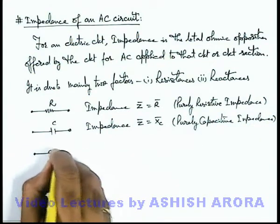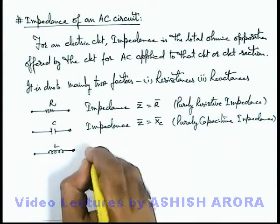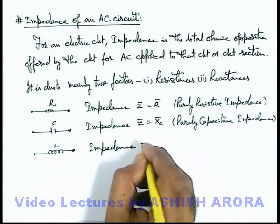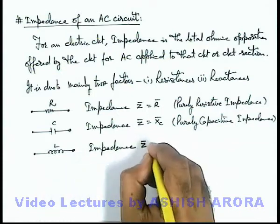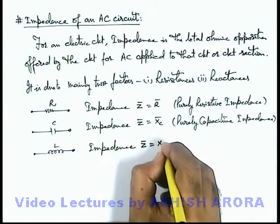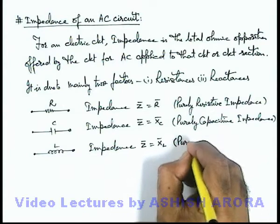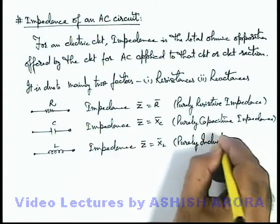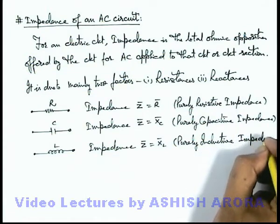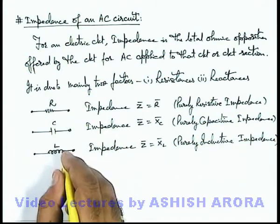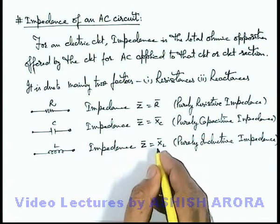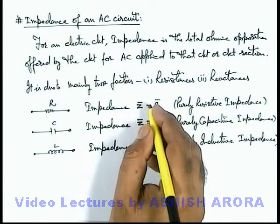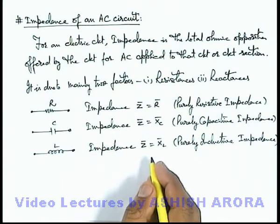Similarly, for an inductor, the impedance — the total ohmic opposition offered by an inductor — is omega L, which is inductive reactance XL. And here we can say this is purely inductive impedance. All three offer R, Xc, and XL values of ohmic opposition, so they are written as resistive, capacitive, and inductive impedance respectively.